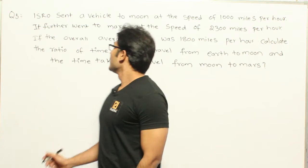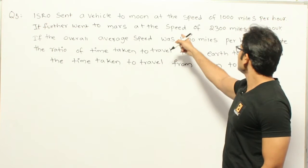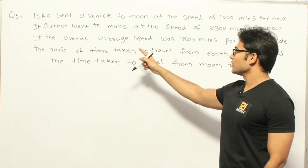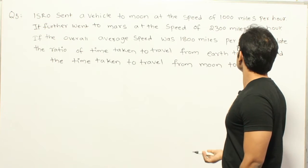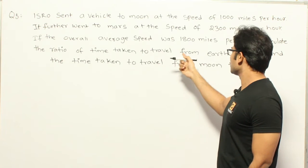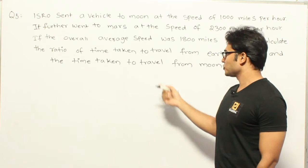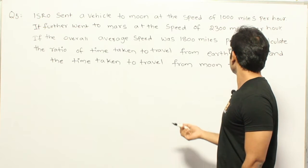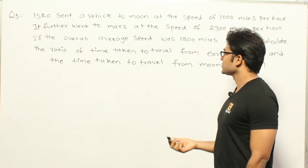Let's see this question. ISRO sent a vehicle to the moon at a speed of 1000 miles per hour. It further went to Mars at a speed of 2300 miles per hour. If the overall average speed was 1800 miles per hour, then calculate the ratio of time taken to travel from Earth to Moon and the time taken to travel from Moon to Mars.